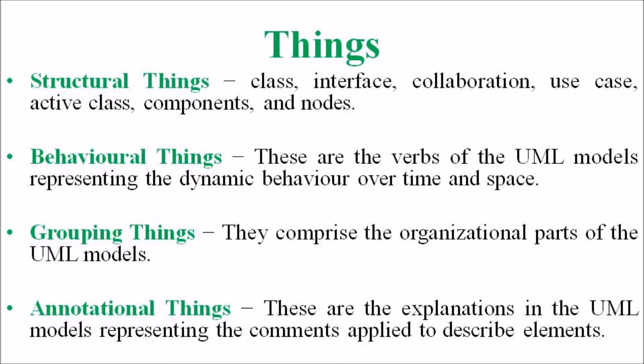The behavioral things are the verbs of the UML model, representing the dynamic behavior of a system across time and space. The two types of behavioral things are interaction and state machine. Third, the grouping things comprise the organizational parts of the UML model, and there is only one kind of grouping thing: the package. Fourth, annotational things are the explanations in UML models, representing comments applied to describe elements.